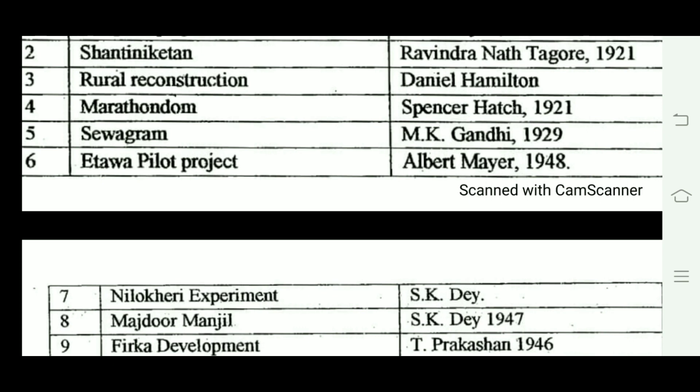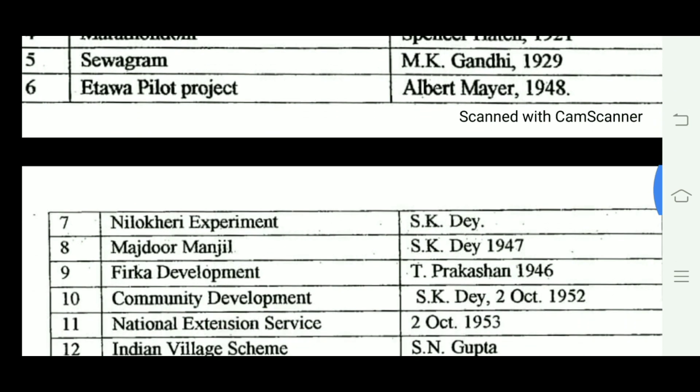The Nilokheri Project was associated with S.K. Dey. Its main purpose was to provide shelter for approximately 7,000 Pakistan immigrants. The Mazdoor Manchali strategy under S.K. Dey was initiated in 1947. The FITCA Development Project was associated with Tanguturi Prakasam Pantulu Gaaru and was initiated in 1946.